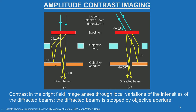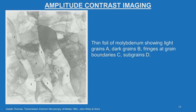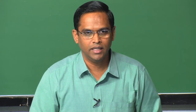For dark field imaging, the direct beam is stopped by the objective aperture and only the diffracted beam is allowed to pass through, forming the dark field image. Both bright field and dark field images are formed through this operation, which can be done through beam tilt. A typical bright field TEM micrograph of a thin foil of molybdenum shows light grains, dark grains, fringes, and sub-grains.